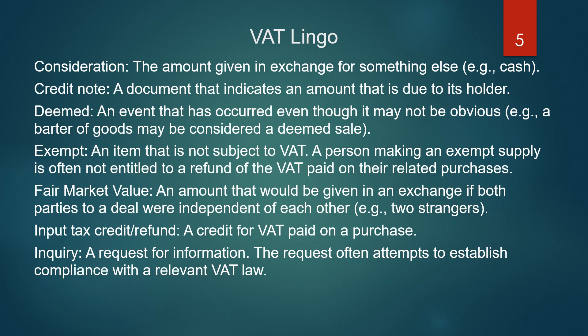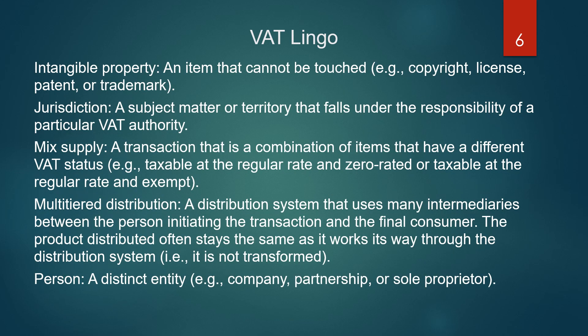Input tax credit or refund: a credit for VAT paid on purchase. Inquiry: a request for information. The request often attempts to establish compliance with a relevant VAT law. Intangible property: an item that cannot be touched. Examples include a copyright, a license, a patent, or a trademark.